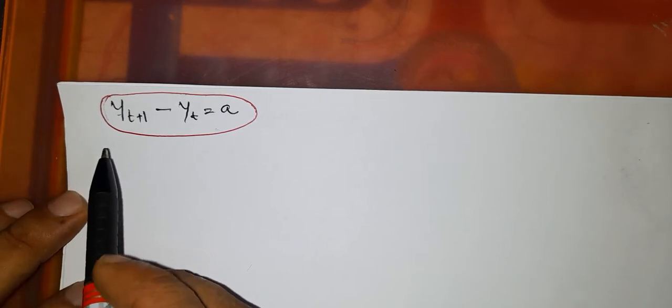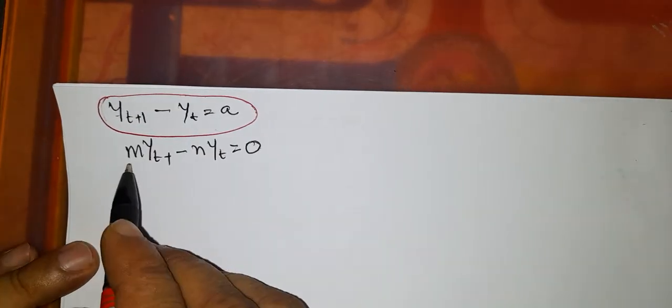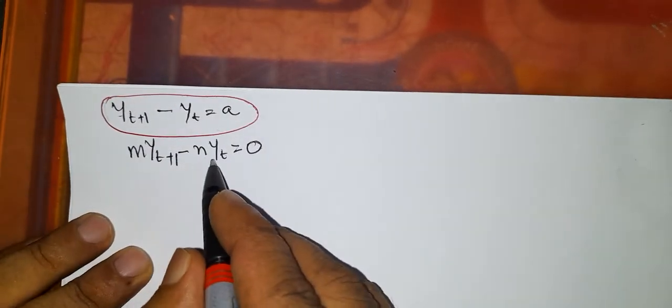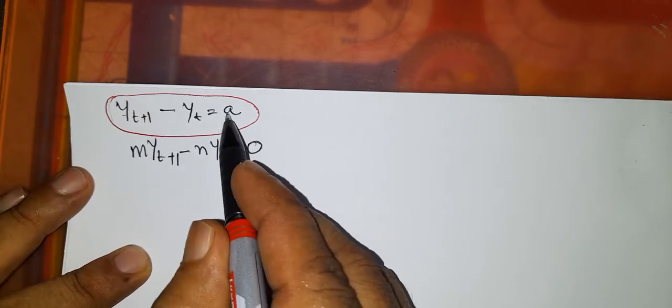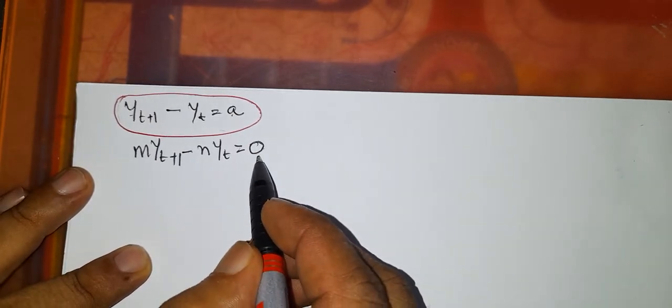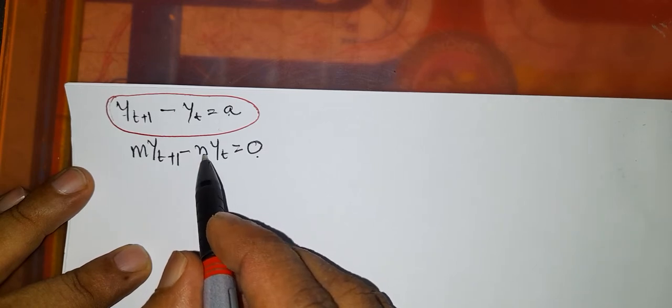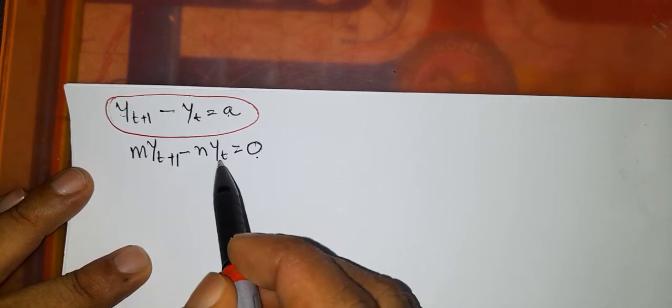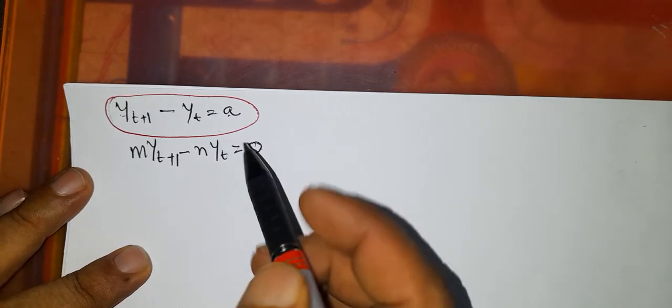Now let us consider another form: m·y_{t+1} minus n·y_t = 0. Here the coefficient of y_{t+1} is m, the coefficient of y_t is n, and the constant term is 0. This is called a homogeneous first order difference equation.